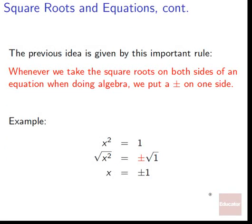This previous idea is given by an important rule we must always remember whenever we take square roots, otherwise we'll introduce mistakes. Whenever we take the square root on both sides of an equation, we put a plus or minus on one side. So for example, if we have x² = 1, we take the square root of both sides, we get √(x²) = ±√1, which gives x = ±1, unfolding into x = 1 and x = −1 as two answers.